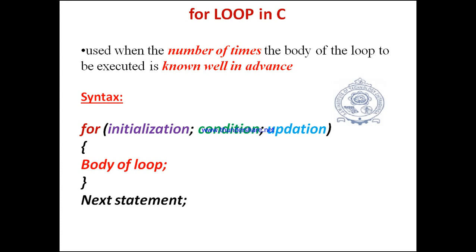In C language, the syntax of the for loop is: for, within parentheses — initialization semicolon condition semicolon updation — then within a pair of curly braces we use statements: statement one, statement two, and so on.